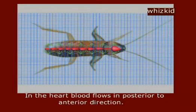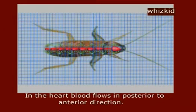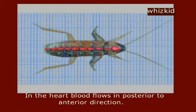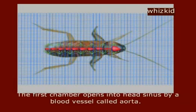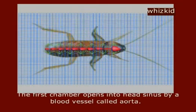In the heart, blood flows in a posterior to anterior direction. The first chamber opens into the head sinus by a blood vessel called the aorta.